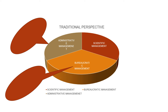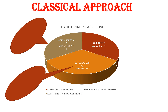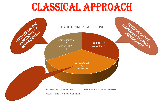In the traditional perspective, there are three types of management: administrative management, scientific management, and bureaucratic management. Administrative management focuses on the functions of management, scientific management focuses on individual workers' productivity, and bureaucratic management focuses on the overall organizational system.